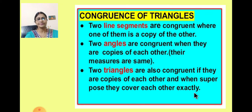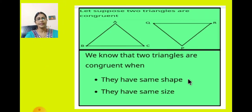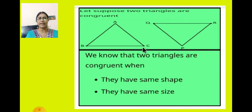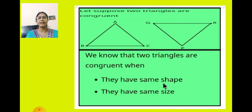Let us see this example. Let us suppose these are two triangles which are congruent. This is triangle ABC and this is triangle PQR, and they are congruent. We know that two triangles are congruent when they have the same shape — you can see these two shapes are the same — and they have the same size. So here these two triangles are congruent.